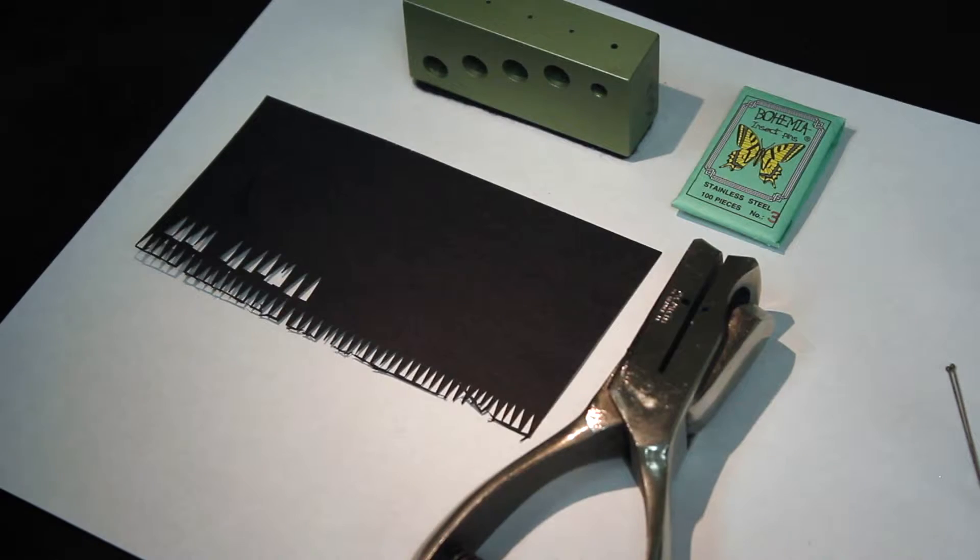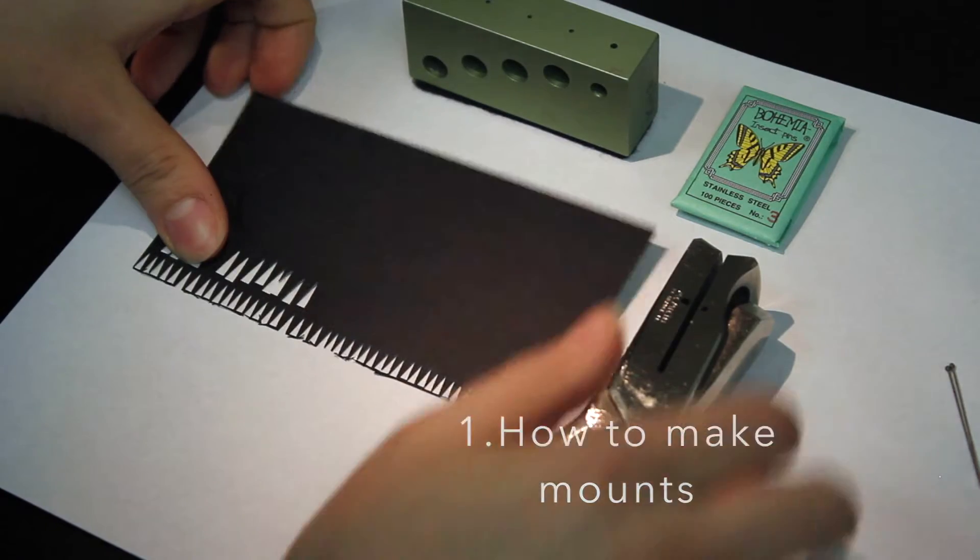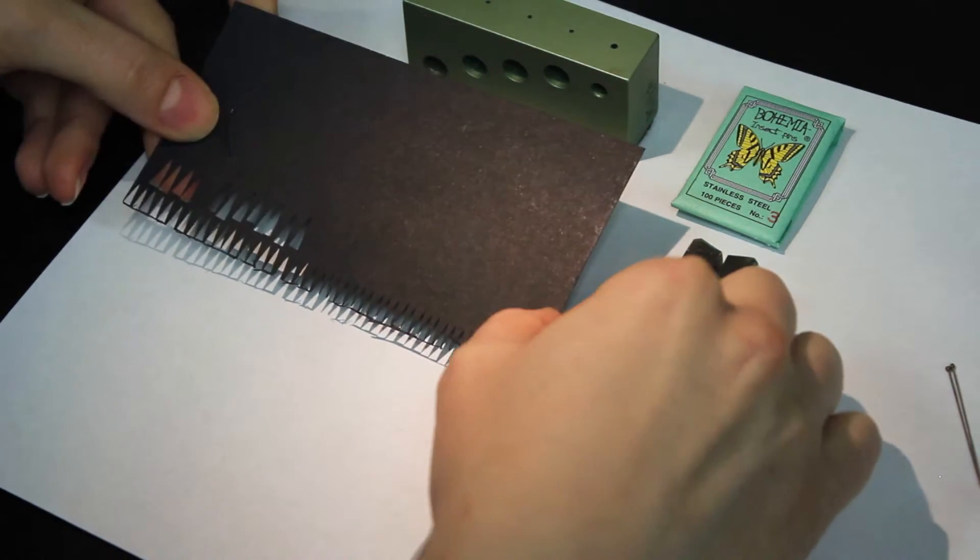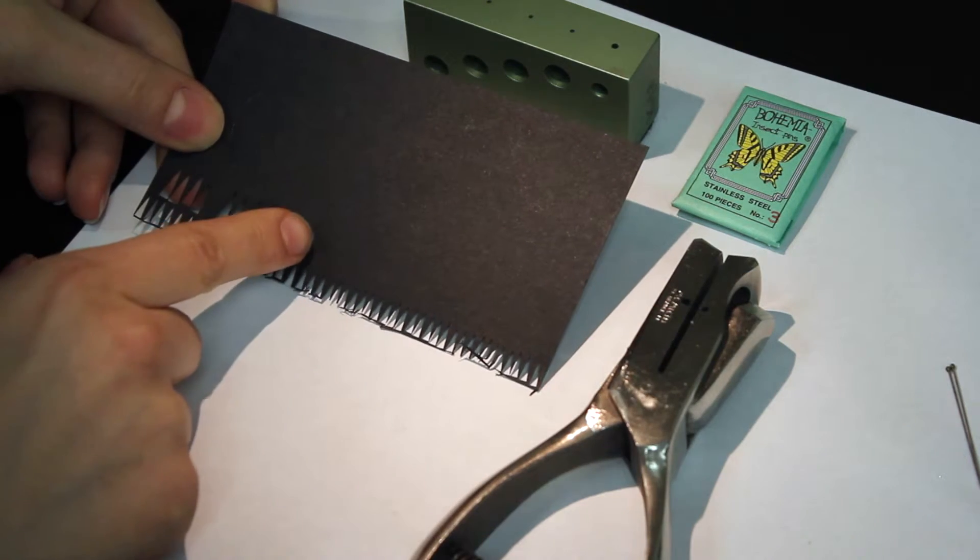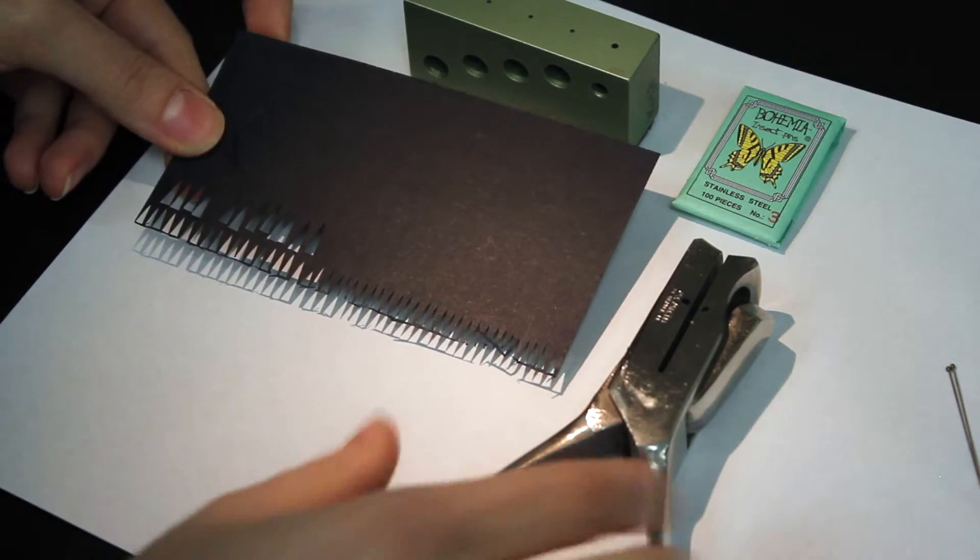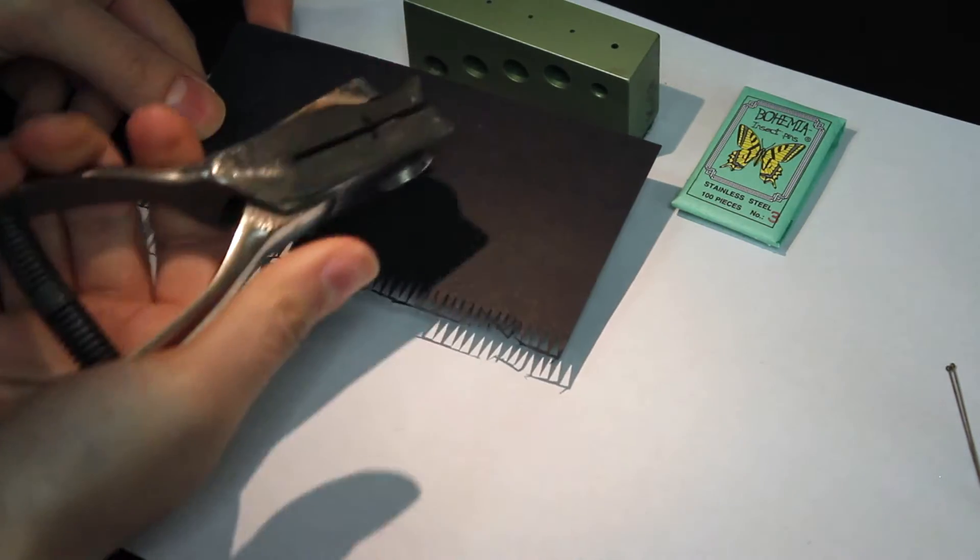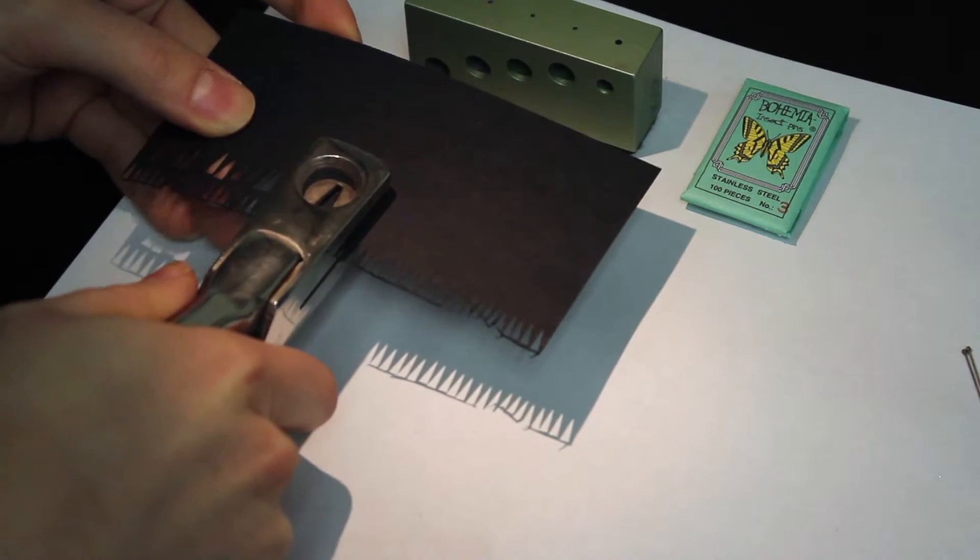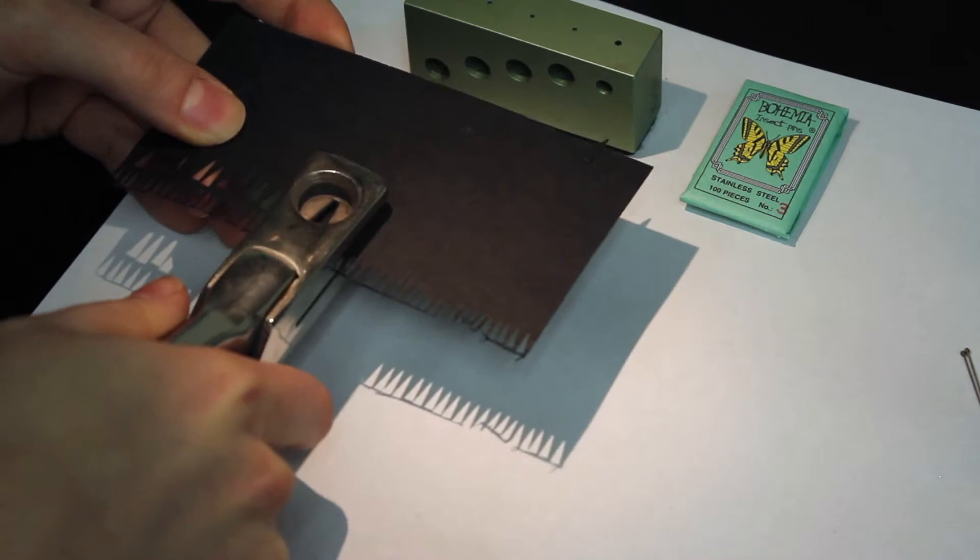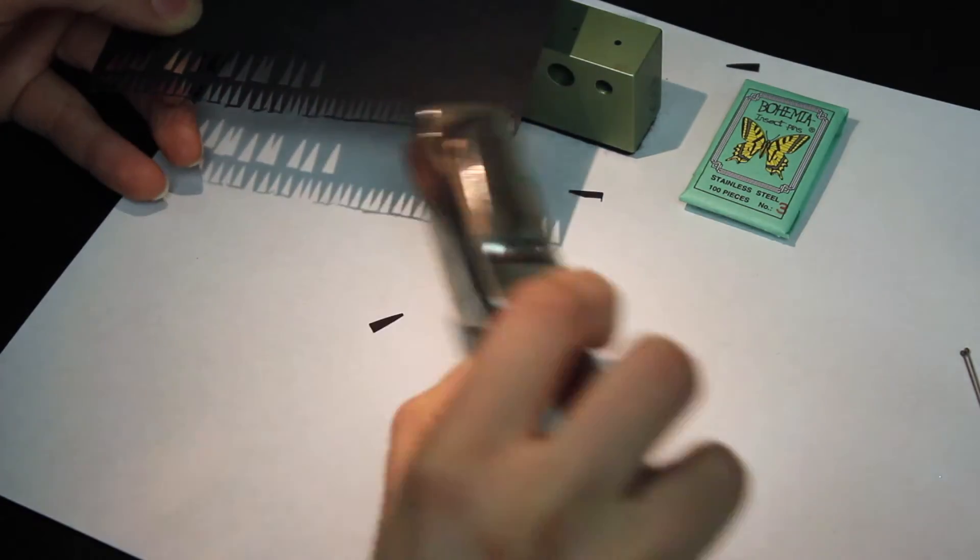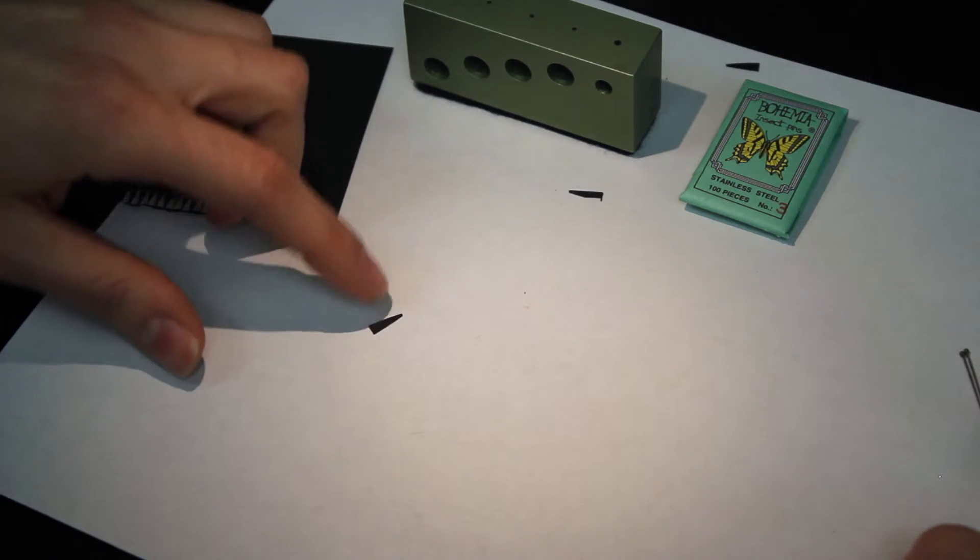To begin, we're going to punch out some pin points. The black construction paper has its own graining. This construction paper has graining that goes vertically, so that's the direction that we're going to punch out the points. Taking your puncher, punch out as many points as you need for all the specimen in your vial. For now I'm just going to punch a couple.